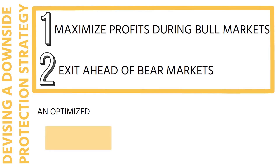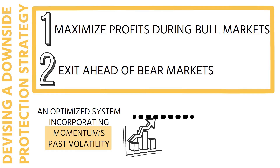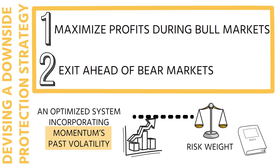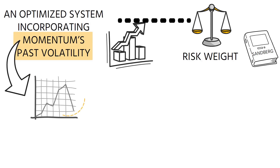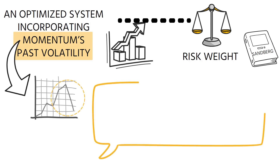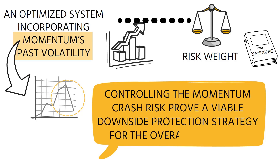An optimized system incorporates momentum's past volatility. As volatility rises relative to a predefined benchmark, the capital invested in equities is reduced in favor of a low-risk asset, such as long-term treasury bills. This risk-weighting approach is related to the work by Sandbergi. We have selected a momentum portfolio for risk mitigation because momentum has experienced the worst crashes of all factors throughout history. Therefore, controlling the momentum crash risk proves a viable downside protection strategy for the overall portfolio.